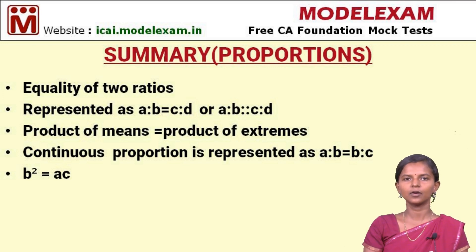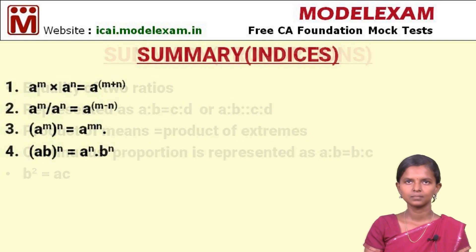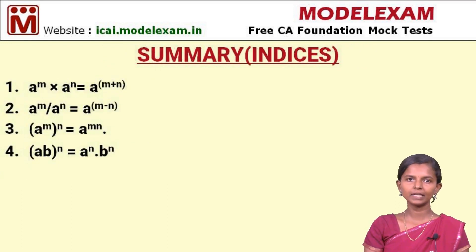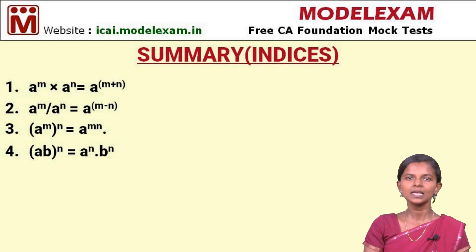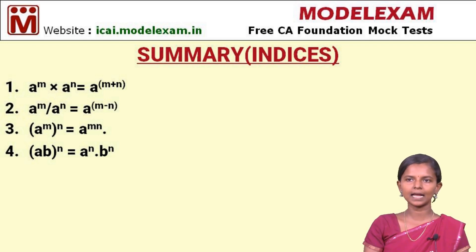The next one is the summary of indices. Here are the basic laws used in indices problems. The first law is A power M into A power N equals A power M plus N — the base is common and we add the powers. The second law is A power M divided by A power N equals A power M minus N, where the base is the same but in division form, so we use the minus symbol.